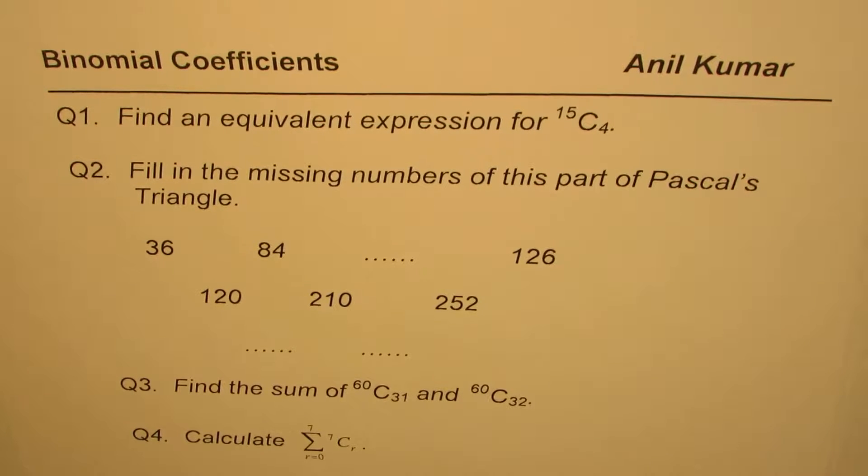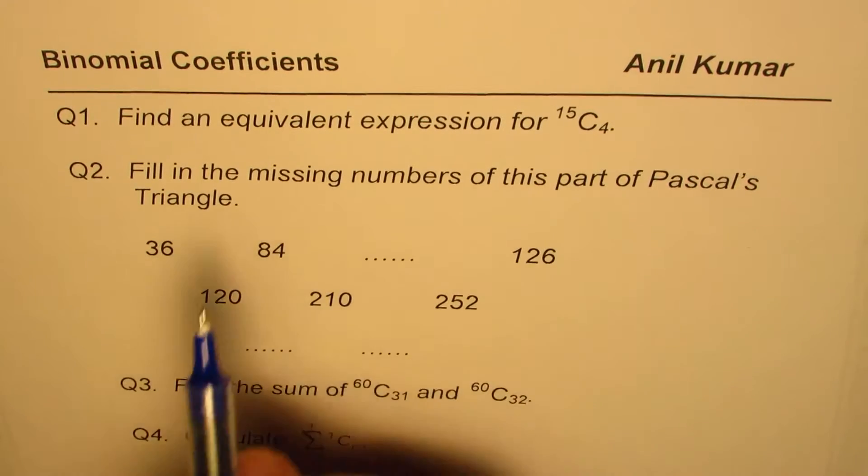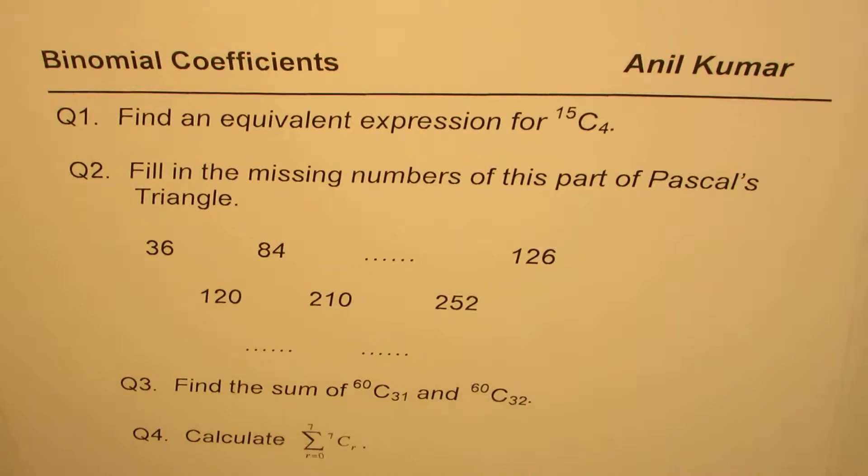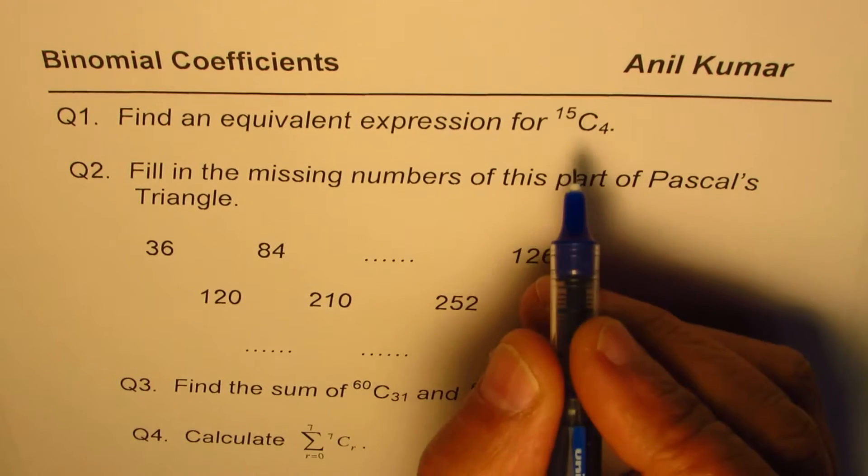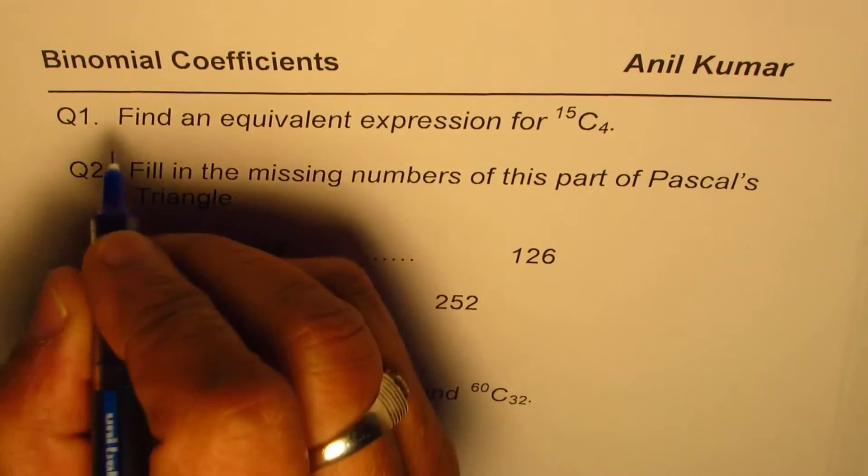Now let us review the properties of Pascal's triangle which we have learned. The first one is related to the first property: find an equivalent expression for 15C4. Property one is regarding symmetry.